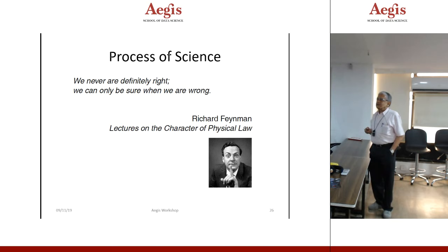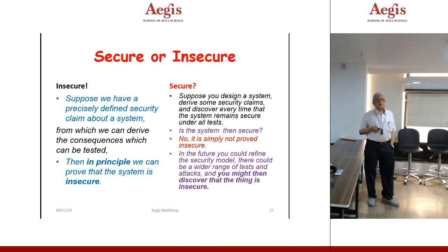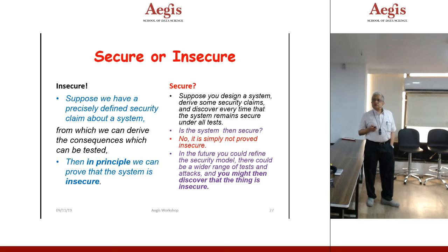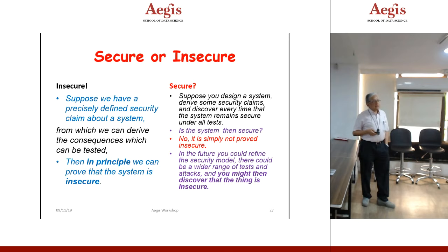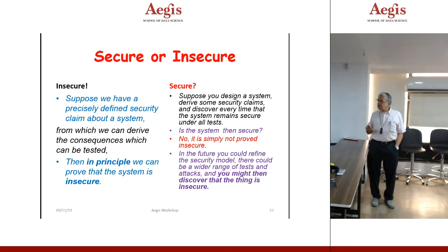Suppose we have a precisely defined security claim about a system from which we can derive consequences that can be tested — then in principle we can prove a system is insecure. But to prove it secure: even if you design a system and discover it remains secure under all tests, is the system then secure? No, it is simply not proved insecure. In the future you could refine the security model, apply a wider range of tests and attacks, and might then discover it is insecure. For example, radiation side-channel attacks — until that side channel was discovered, the system was considered safe.